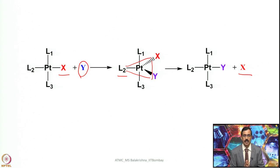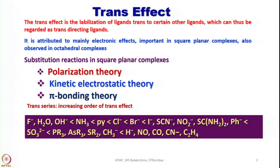With this background, let us start looking into the trans effect. The trans effect is the labilization of ligands trans to certain other ligands, which can thus be regarded as trans directing ligands. That means the labilizing effect of a group trans to itself during substitution reaction, to allow an incoming ligand to a position trans to it, is called the trans effect. It is attributed mainly to electronic effects, important in square planar complexes, and also observed to an extent in octahedral complexes.